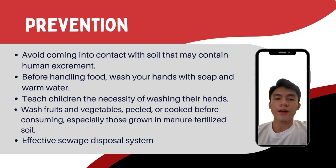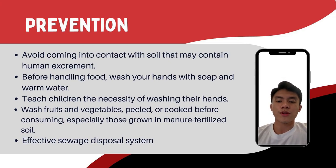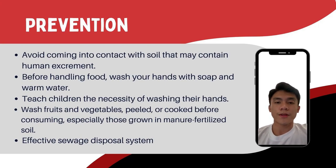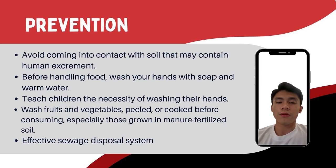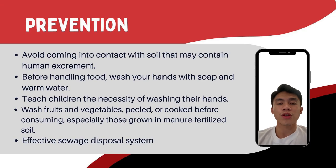There are a number of ways to prevent Helminth Ascaris lumbricoides. First, avoid contact with soil that may contain human excrement or fertilized crops. Second, wash your hands with soap and warm water before handling food. Third, teach children the necessity of washing their hands to avoid infection. Fourth, all raw vegetables and fruits should be washed, peeled, or cooked before consuming, especially those grown in manure-fertilized soil. And lastly, use an effective sewage disposal system.